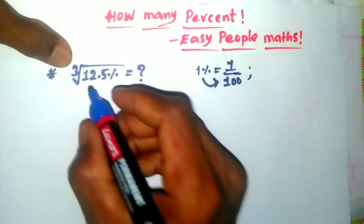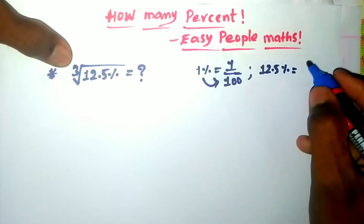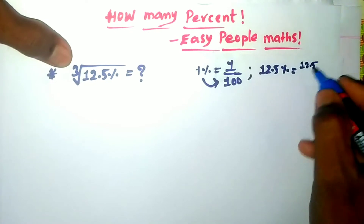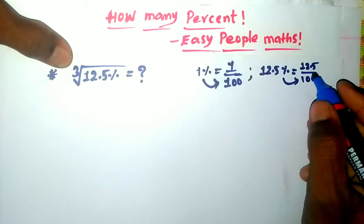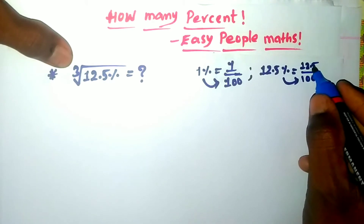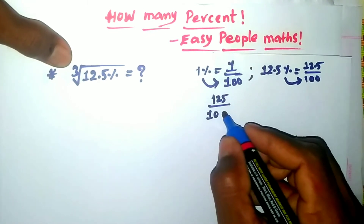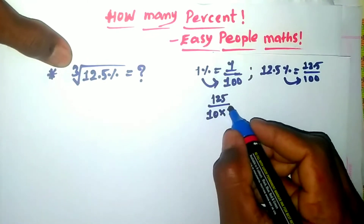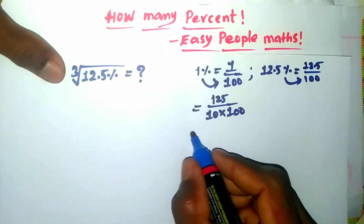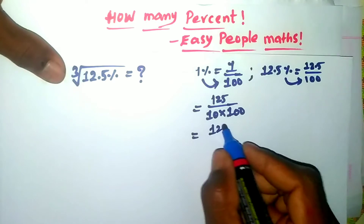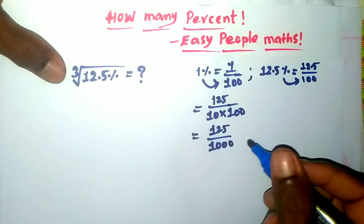Similarly, 12.5% — this is the percentage. With the decimal point, we need to solve this problem. 125 divided by 10, into 100, which gives us 125 divided by 1000. This is the same thing.